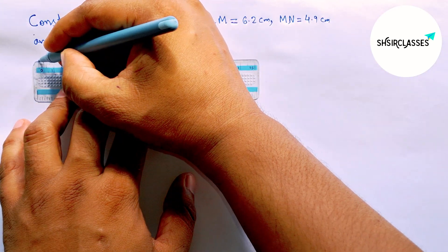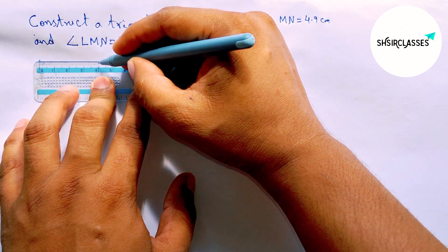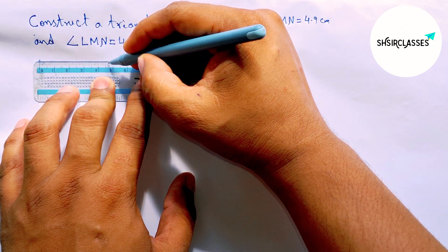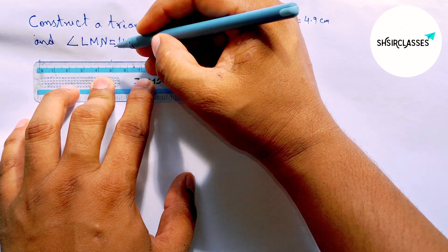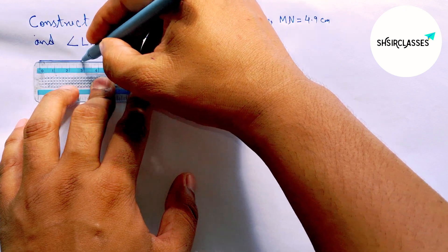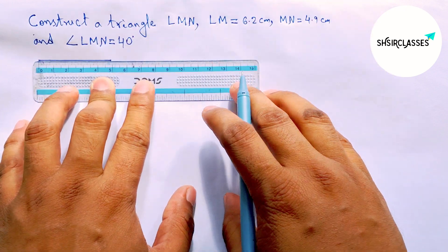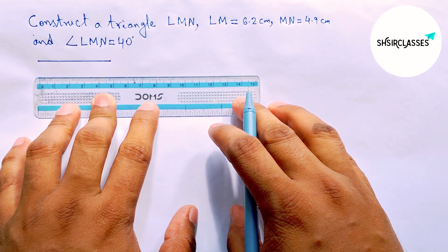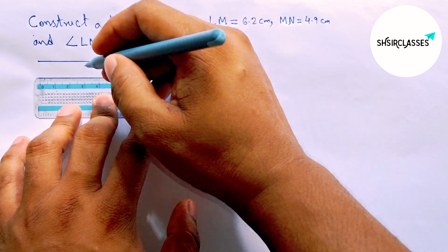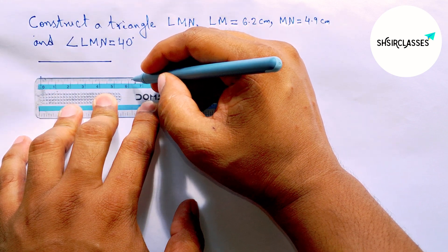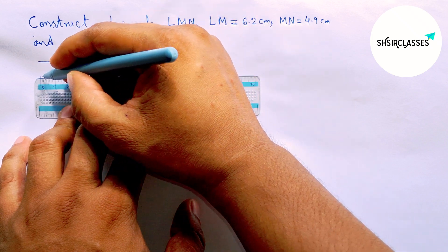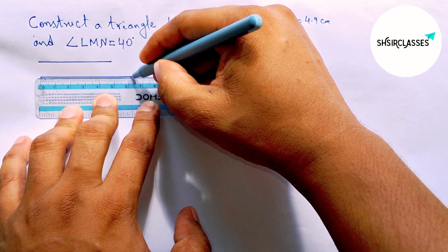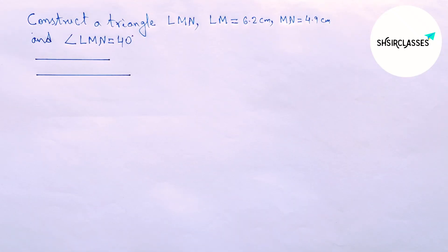First, drawing the two given sides of the triangle. Drawing 4.9 centimeters - this is a 4.9 centimeter line segment. Drawing another line segment of length 6.2 centimeters - this is the 6.2 centimeter line segment.